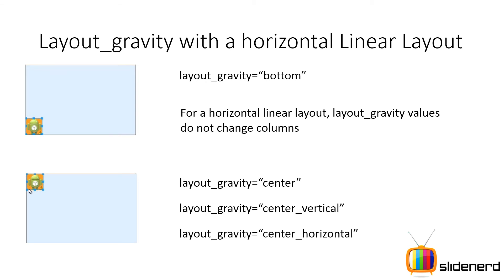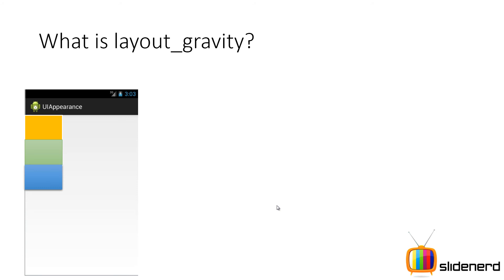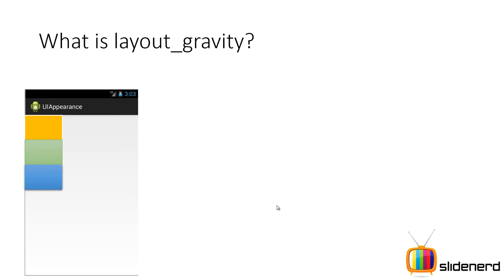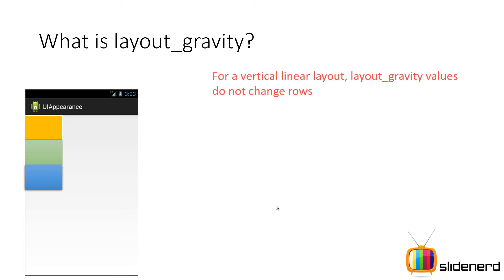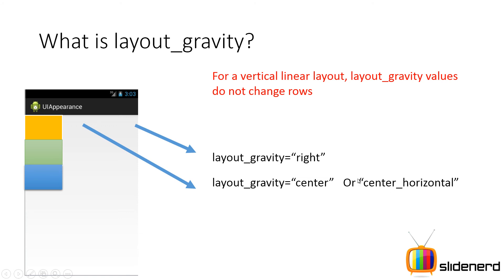Now let's talk about what happens in a vertical linear layout. In a vertical linear layout, there is one control per row, so everything is placed in a separate row. The user interface elements can only move along their same row — they cannot change rows. Just as in a horizontal linear layout they don't change columns with layout gravity values, here they don't change rows. When you say layout gravity is right, the yellow box goes to the right. When you say layout gravity is center or center horizontal, it goes straight to the middle of the row. When you say layout gravity is left, it goes back to the default location.